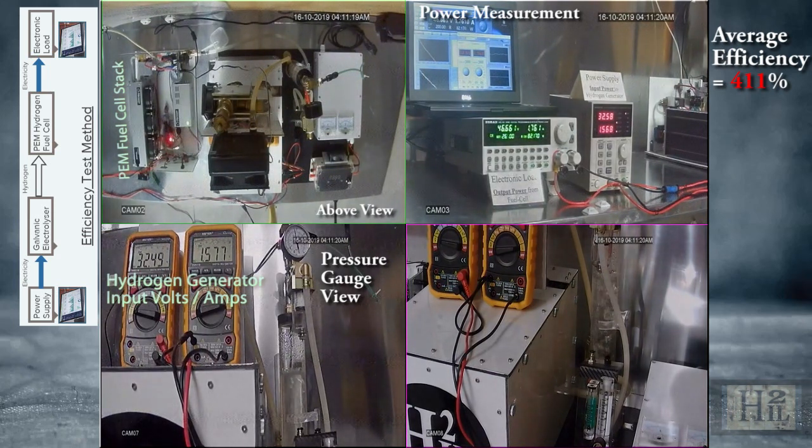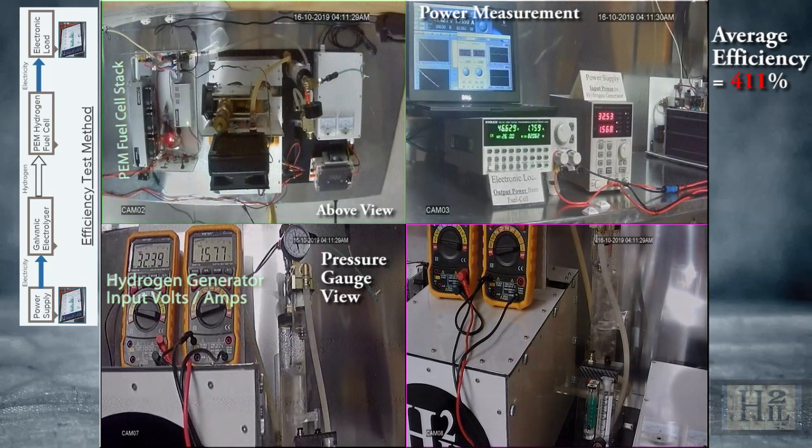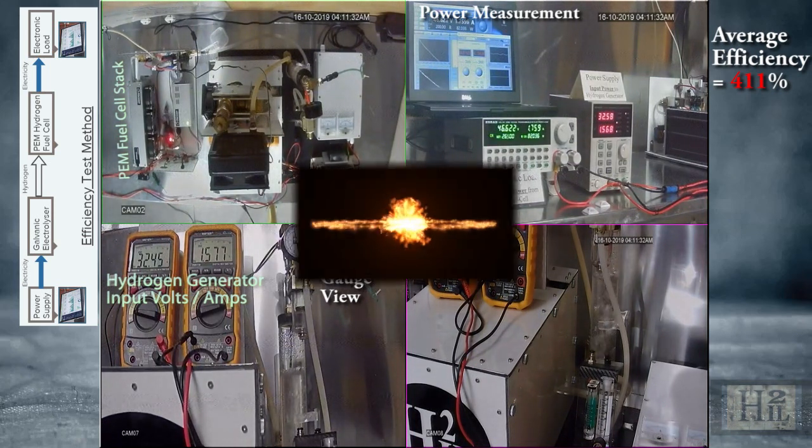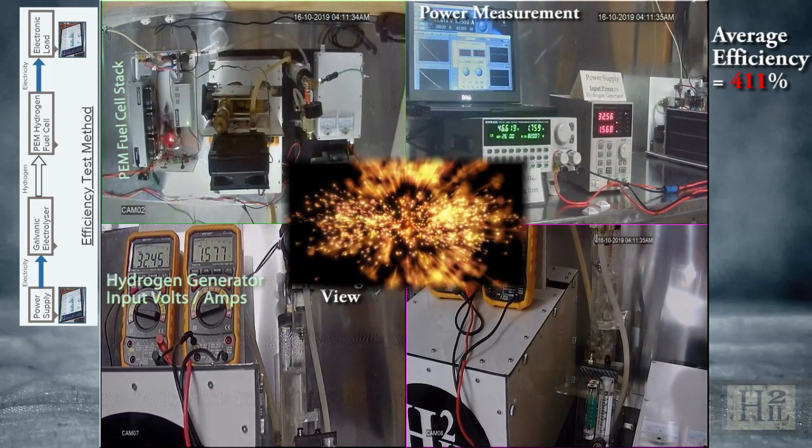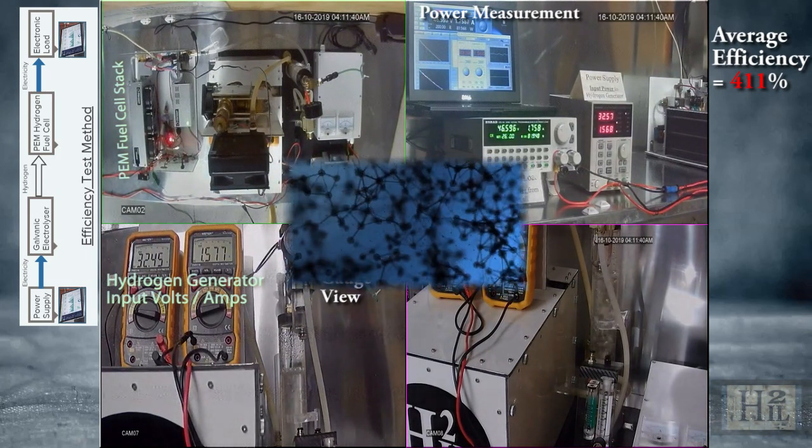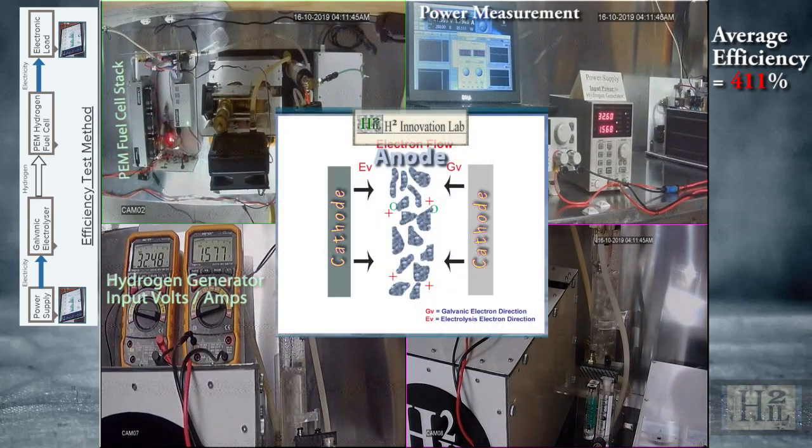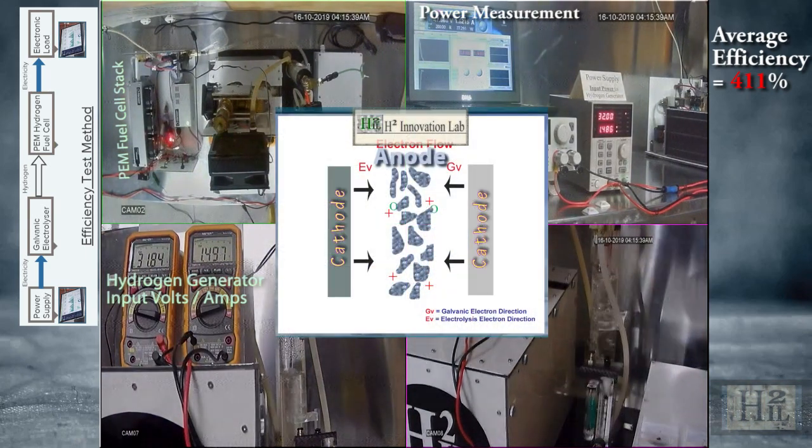Energy combination at an ionic level is uncharted waters in mainstream science. When an atom is in a stable state, its strength requires brute force energy to manipulate. But when an atom is an ion, it is much easier to combine energies through redox reactions. The input electricity is just a stimulus triggering the reactions.